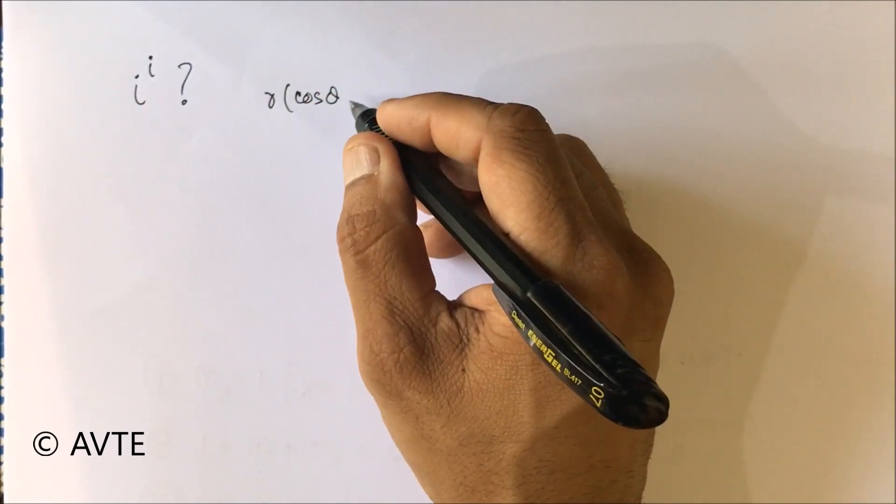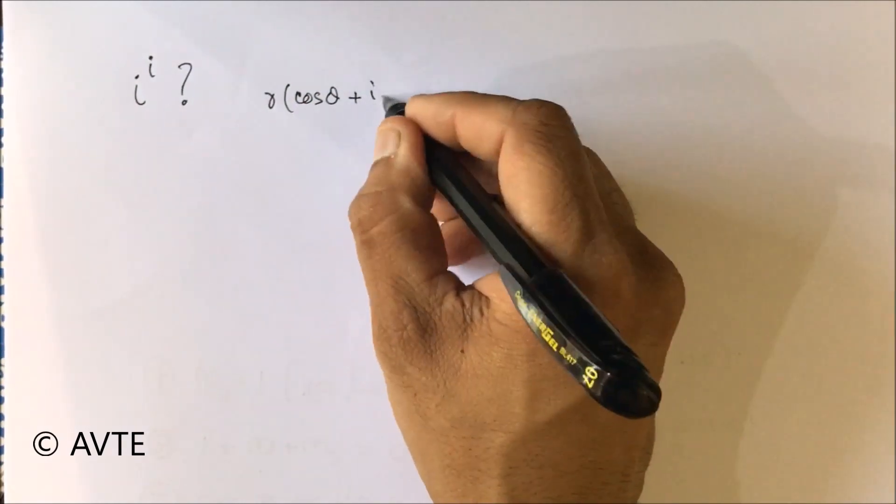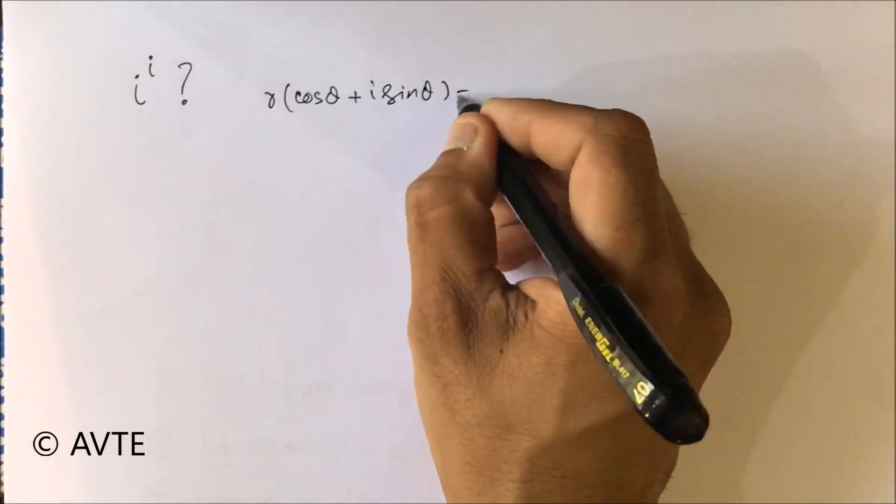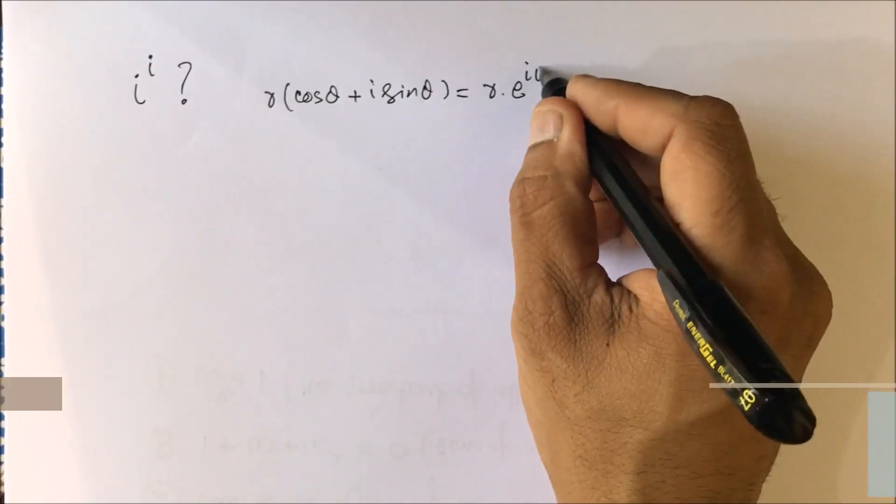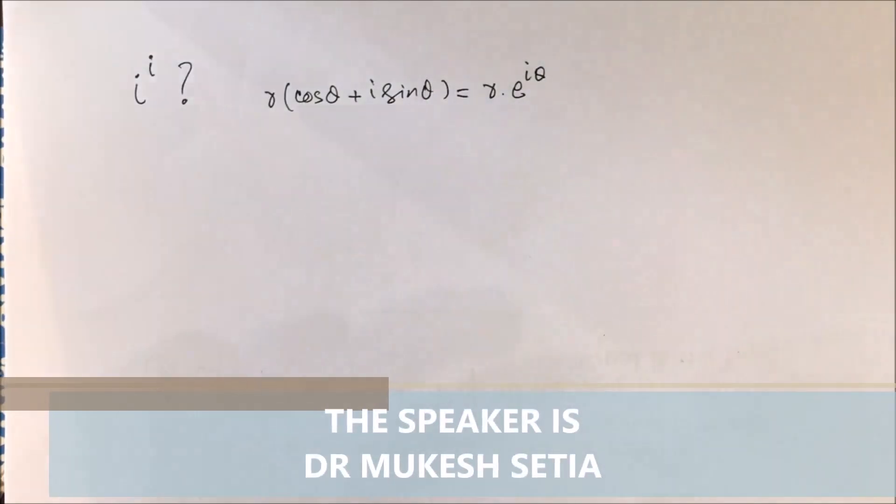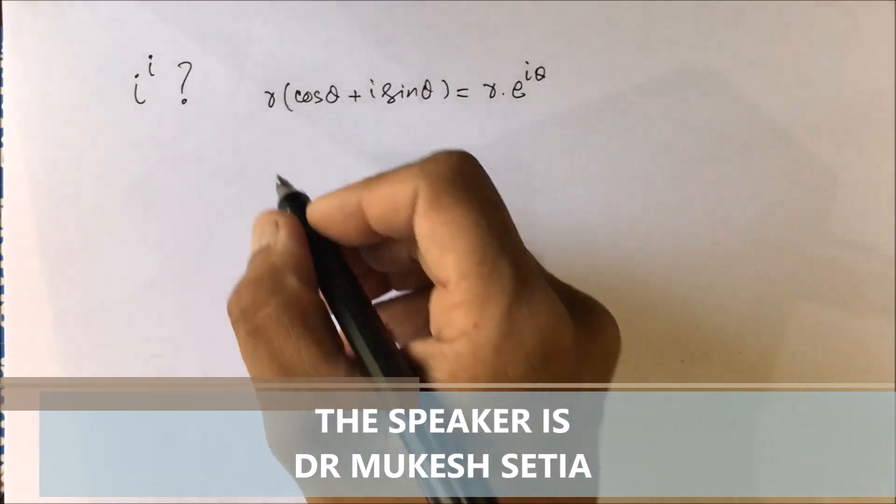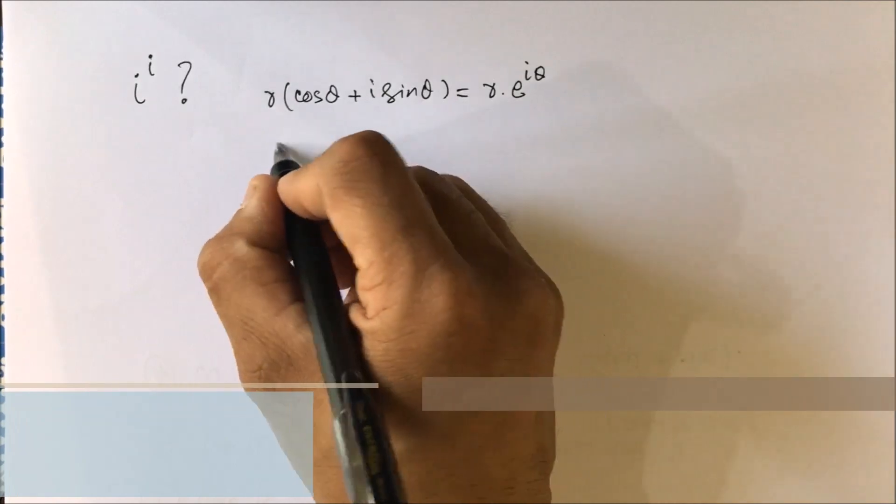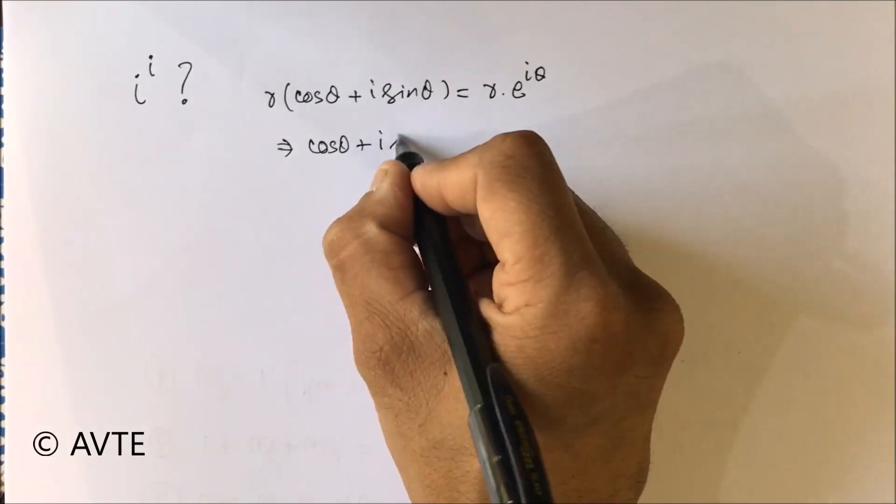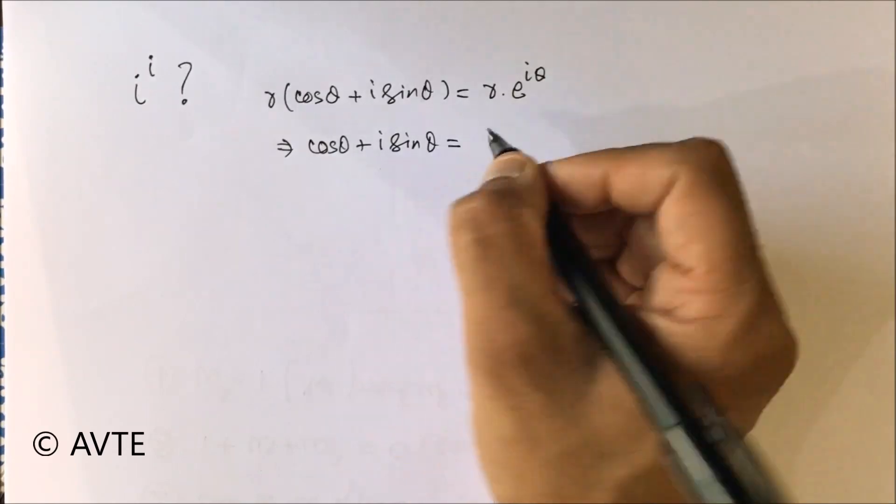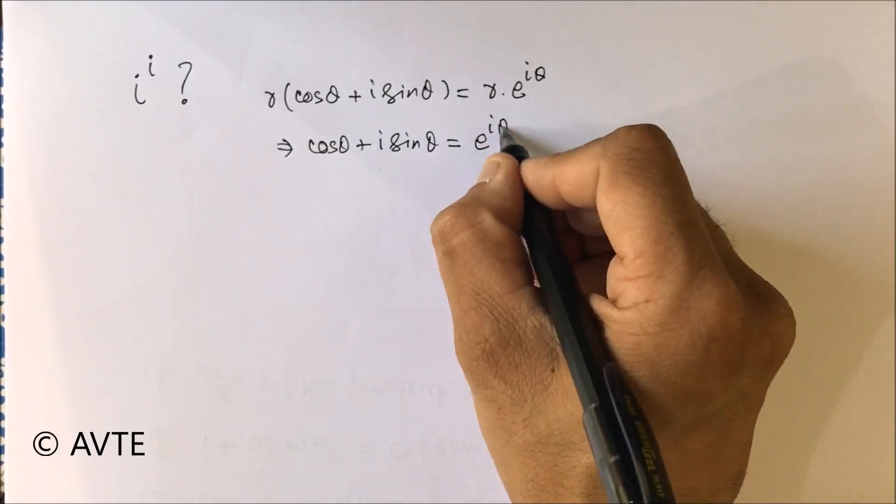Euler's relation is r times cos theta plus iota sine theta, and that can be taken as e to the power i theta. This is Euler's relation. This can also be taken as cos theta plus iota sine theta, which is equal to e to the power i theta.